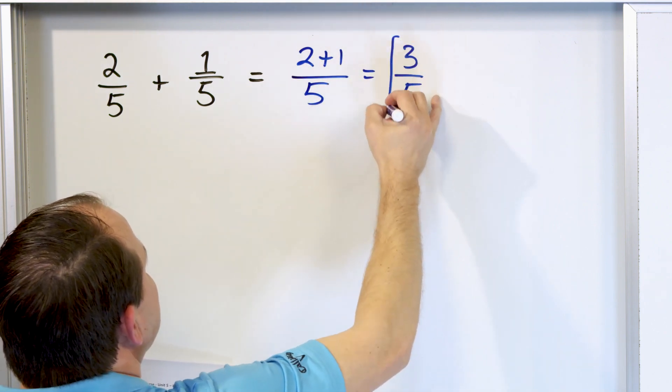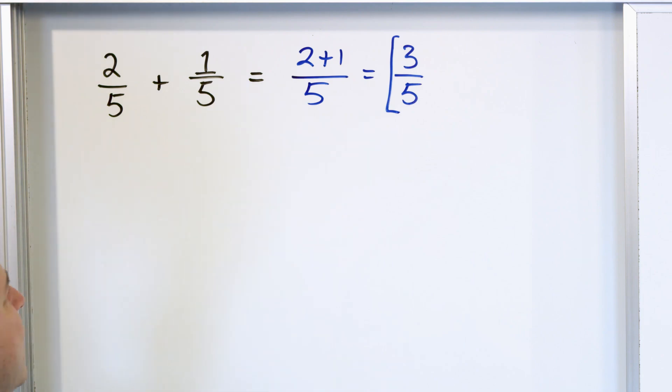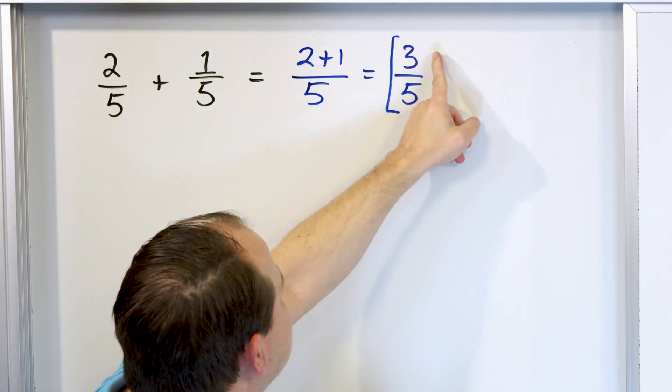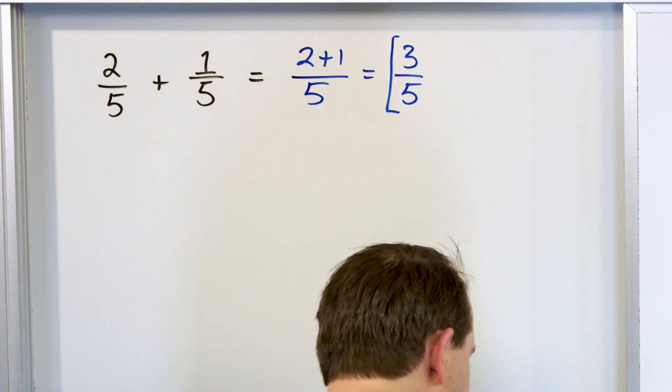3 on the top, 5 on the bottom. This is the final answer because we cannot simplify this. I cannot divide top and bottom by something to make it any simpler.